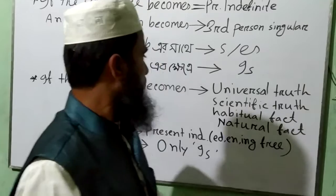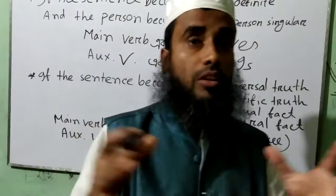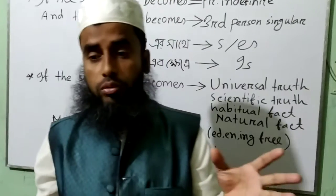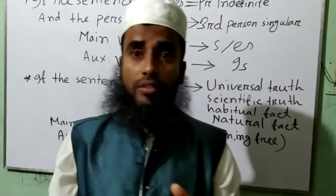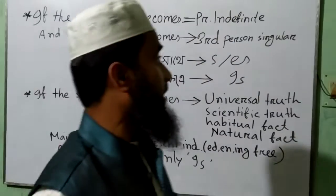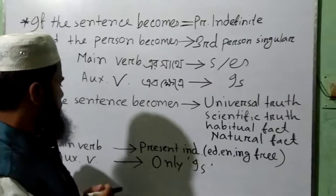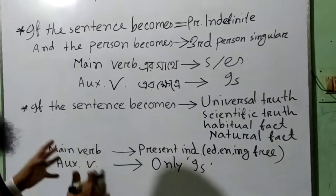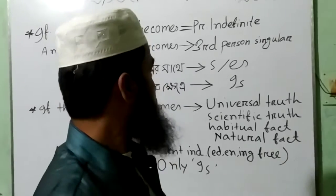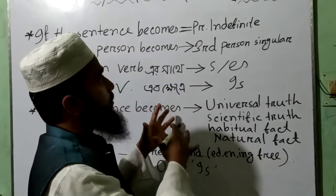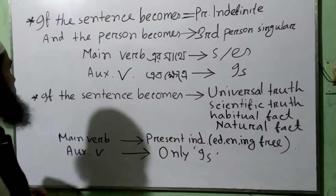It is known to us that tense is an elaborate subject and elaborate topic. For filling in the gaps or right form of verbs, tense is a very important topic. So we should start from the topic tense, and from the beginning we shall discuss the right form of verb according to tense.